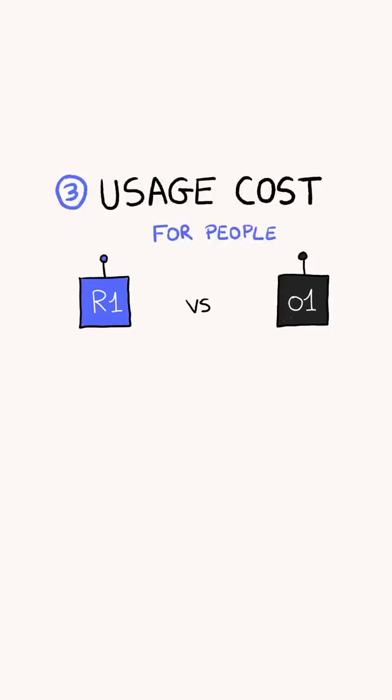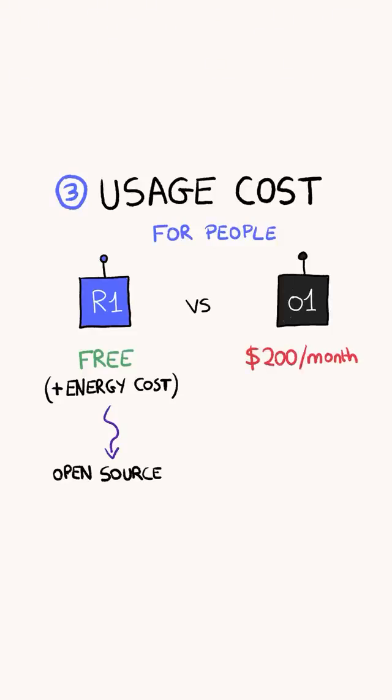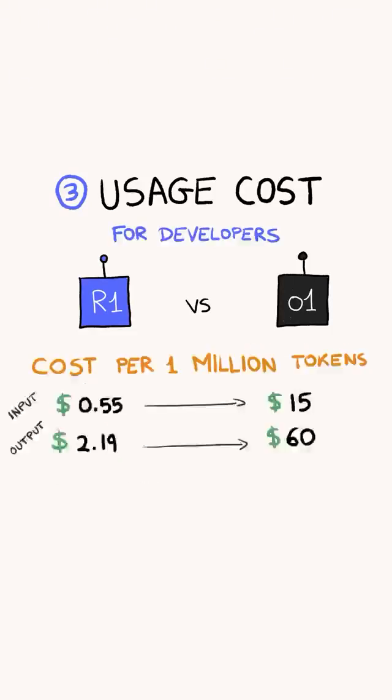R1 is also significantly cheaper to use. You can use R1 for free because it's open source, but you need to pay $200 a month to use O1. R1 is also cheaper for developers and businesses, with their API pricing being 97% cheaper than O1.